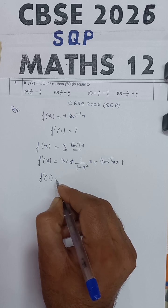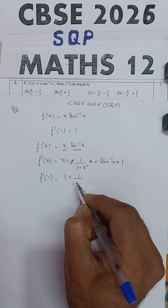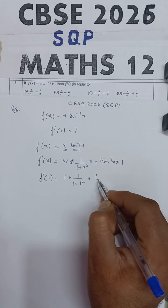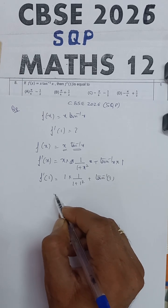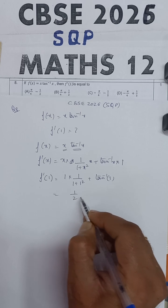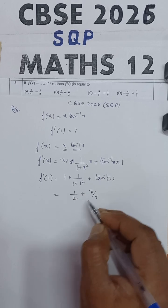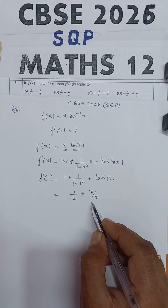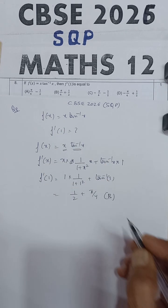If we substitute x equal to 1: 1 upon 1 plus 1 square plus tan inverse of 1. So this will be 1 by 2 plus tan inverse of 1 is pi by 4. So 1 by 2 plus pi by 4 is the answer, and this is given in option b. So option b is the correct answer.